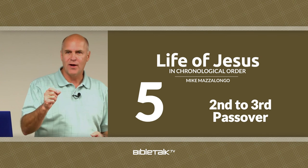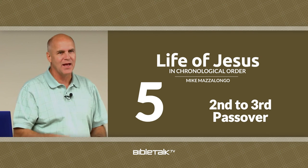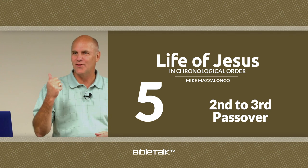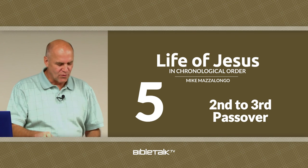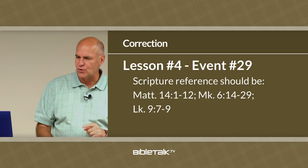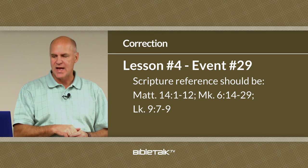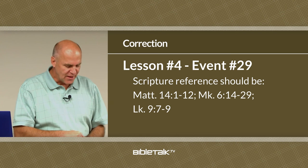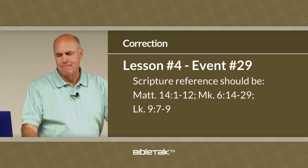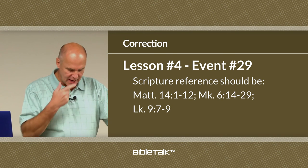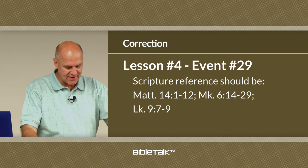I want to thank Carolyn Christensen for pointing this out. She sent me an email and said she's looking these things up and they don't match. So the correct references for event number 29 — that would be Lesson 4, event number 29 — the death of John should be Matthew 14:1-12, Mark 6:14-29, and Luke chapter 9, verses 7-9.